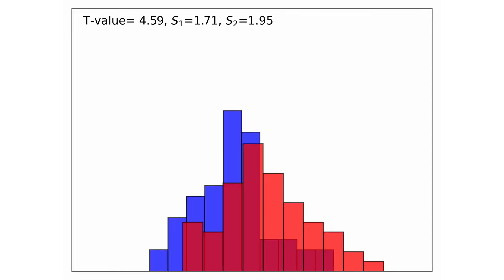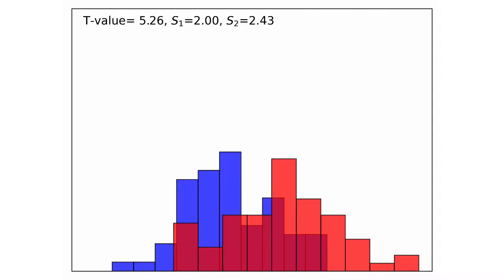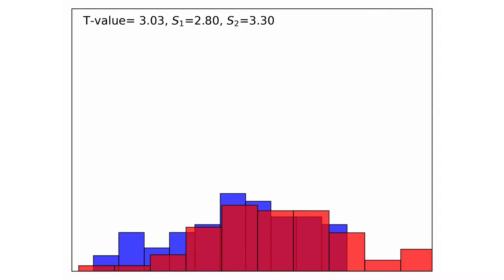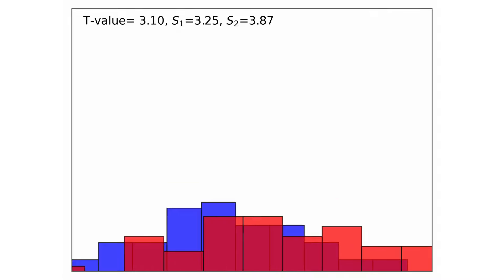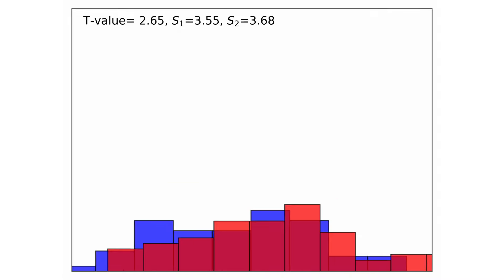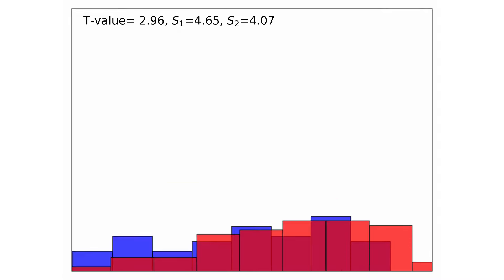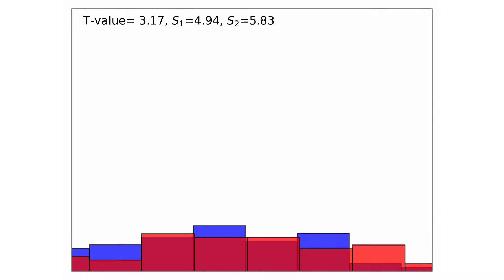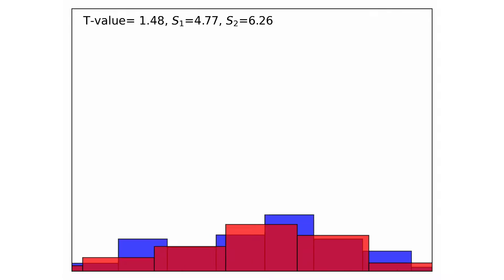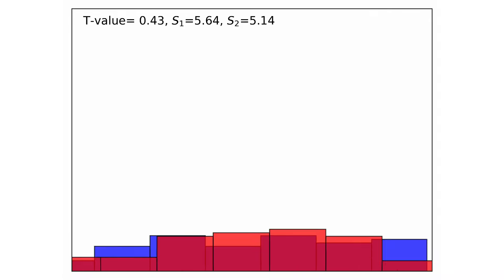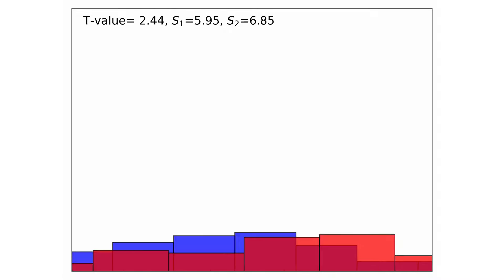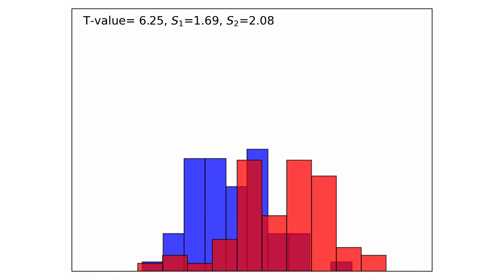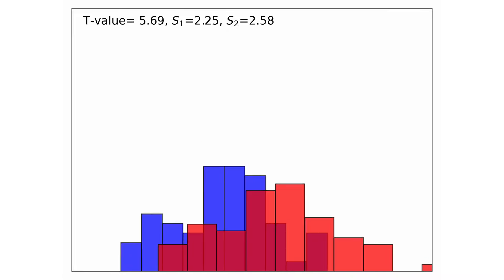Similarly, we have the sigmas in the denominator, which control the spread of the two distributions. We can pretty much see that if we decrease them, the two distributions become narrower, increasing the t-value and the chance of rejecting the null hypothesis. And if we increase them, the two distributions widen, decreasing the t-value and the chance of rejecting the null hypothesis.